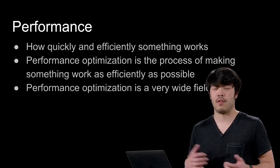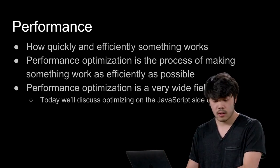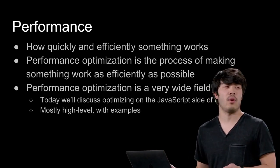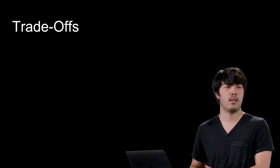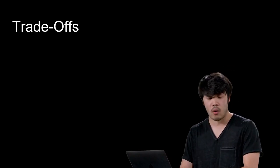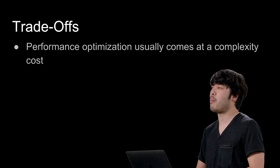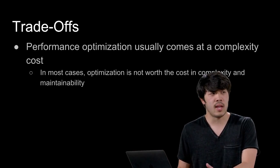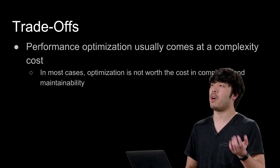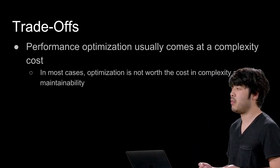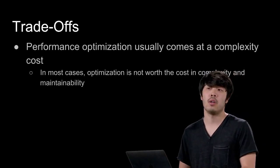Performance optimization is a very wide field, but today we'll only be talking about optimizing the JavaScript side of things at a high level with a few examples. One important thing to know is that there are trade-offs involved. By optimizing performance, we usually pay some cost in application complexity. In most cases, it's not worth optimizing your code because JavaScript is so fast that the complexity and maintainability cost is not worth the little to no gains from optimizing.